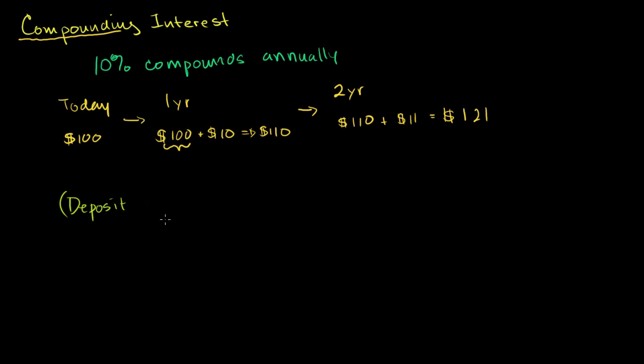Actually, let me do it this way. I don't want to be too abstract. So just to get the math here, to get to this number right here, we just multiplied. That number right there is 100 times 1 plus 10%, or you could say 1.1. Now this number right here is going to be this 110 times 1.1 again, so it's the 100 times 1.1, which was this number right there. And now we're going to multiply that times 1.1 again.